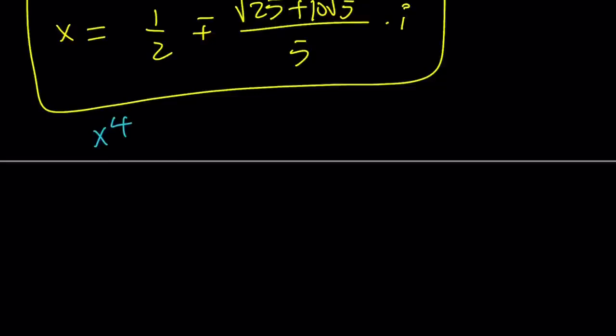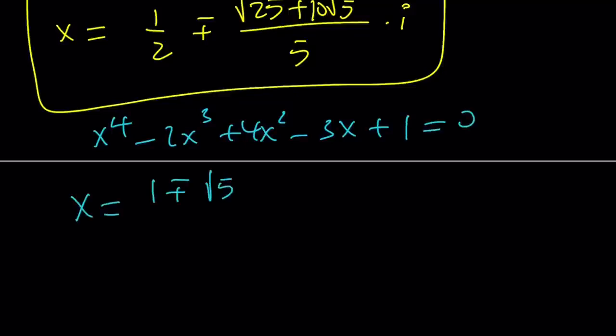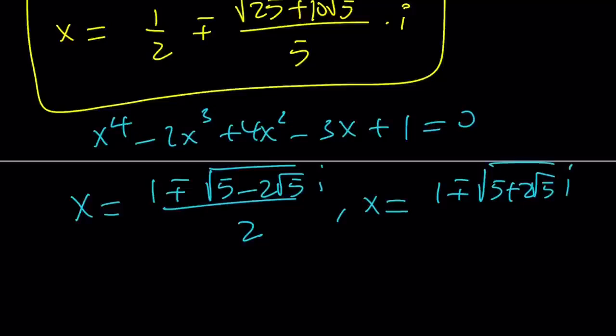The other quartic is x to the fourth minus 2x cubed plus 4x squared minus 3x plus 1 equals 0. Whatever you do to solve this problem, you're going to get 1 plus minus the square root of 5 minus 2 root 5 times i divided by 2. And the other solutions are going to be 1 plus minus the square root of 5 plus 2 root 5 i divided by 2. So that is a total of eight solutions along with x equals one half, that gives us nine solutions.